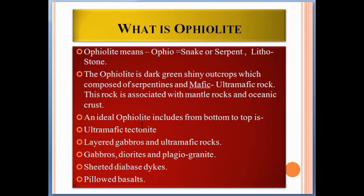An ideal Ophiolite composition, from bottom to top, includes: ultra-mafic tectonite, layered gabbros and ultra-mafic rocks, gabbros, diorite and plagiogranite, sheeted diabase dikes, and pillow basalt. When two plates collide, this sequence forms from bottom to top — ultra-mafic tectonite at the bottom and pillow lava or pillow basalt at the top.